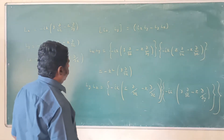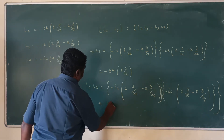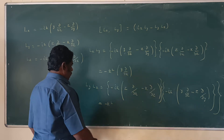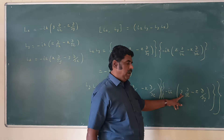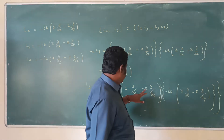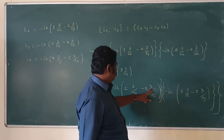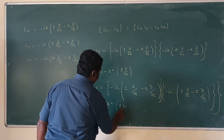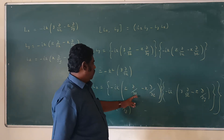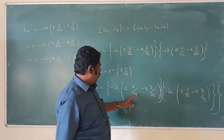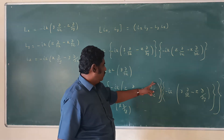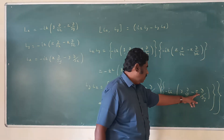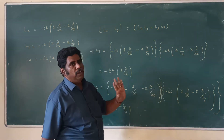We get ℏ² with a negative sign because minus times minus gives plus and i² = −1, so the result is −ℏ². First, ∂/∂x operating on y gives 0; ∂/∂x operating on z gives 0. Then ∂/∂z operating on y gives 0; ∂/∂z operating on z gives 1, so minus times minus gives plus x ∂/∂y. For the second set: ∂/∂x on y is 0, ∂/∂x on z is 0, ∂/∂z on y is 0, and ∂/∂z on z is 1. So the surviving term is x ∂/∂y, giving LyLx = −ℏ² x ∂/∂y.